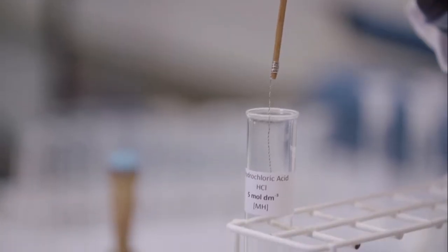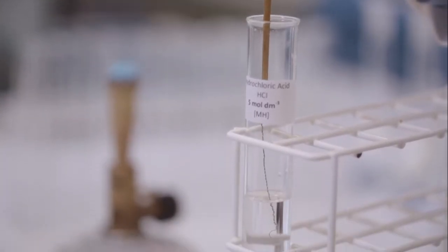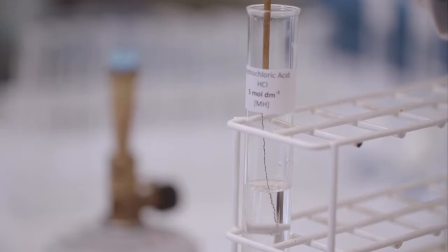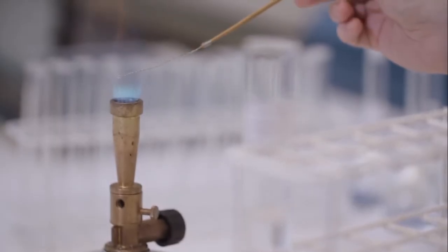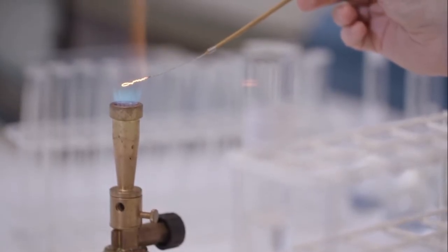In order to carry out the flame test, you need to have a clean flame test wire. To do this, dip the wire into concentrated acid and heat in the hottest part of the flame until no change in the flame colour is observed. You may need to do this a couple of times.